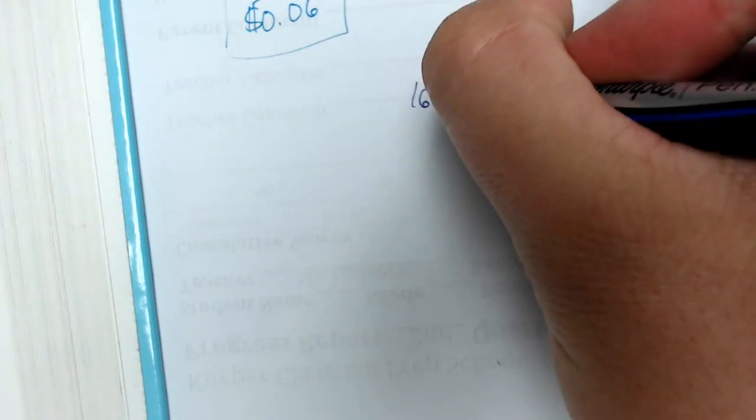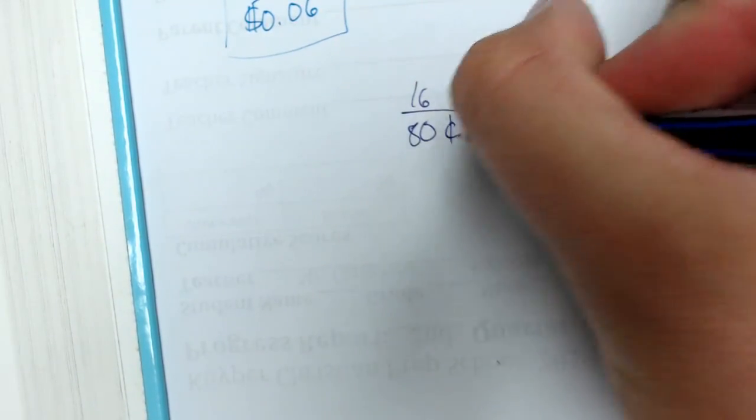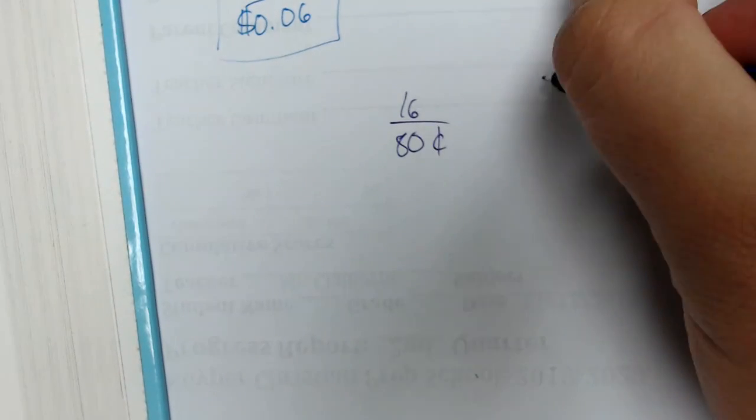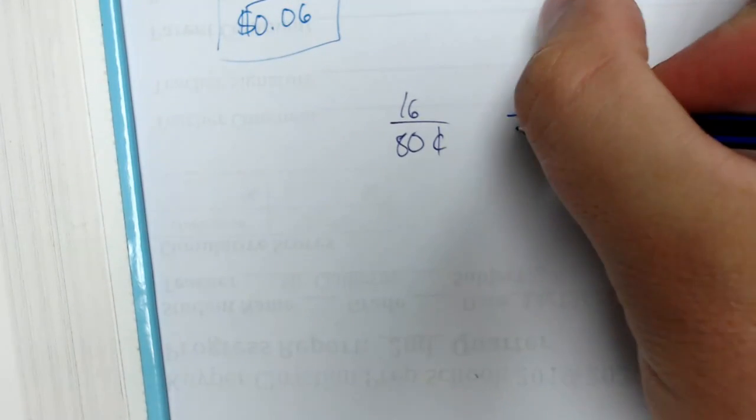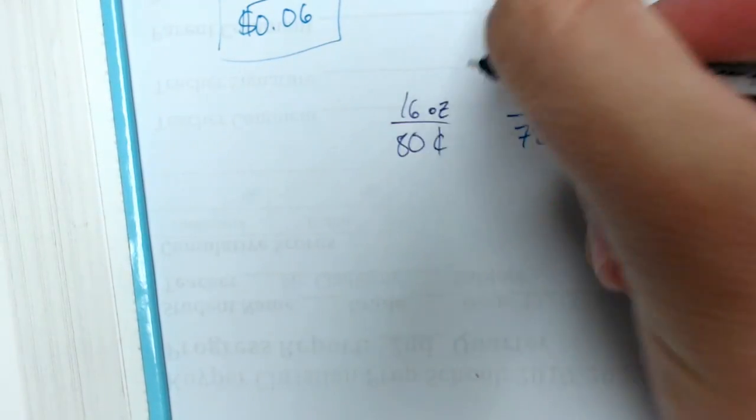Let's write these two ratios and then we'll compare them. We've got the big can weighing in at 16 ounces for 80 cents. I'm just gonna use cents, that's faster. And then I've got the small can weighing in at 12 ounces for 72 cents.